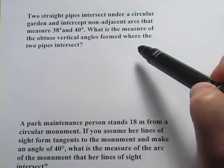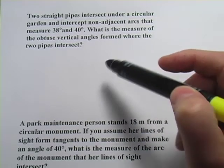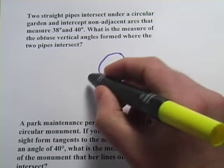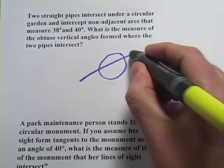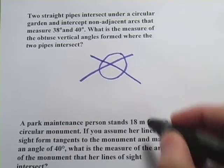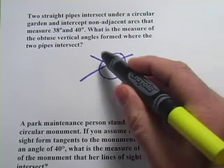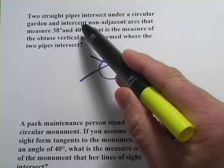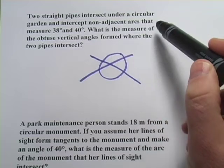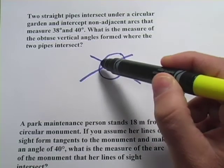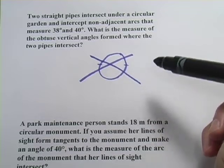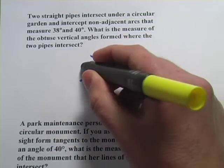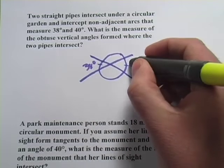It says two straight pipes intersect under a circular garden. So let me draw a circular garden and we've got two straight lines that intersect under here somewhere. So we've got two pipes intersecting and intercept non-adjacent arcs that measure 38 and 40 degrees. So let's say this is 38 degrees and this one's 40 degrees.